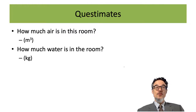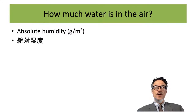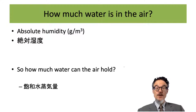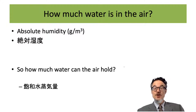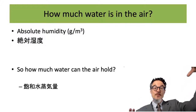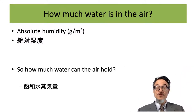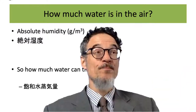The amount of water in the air is also called absolute humidity. It's usually measured in grams per cubic metre — so if you have a cubic metre of air, how many grams of water are in there?